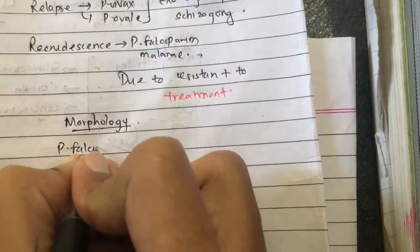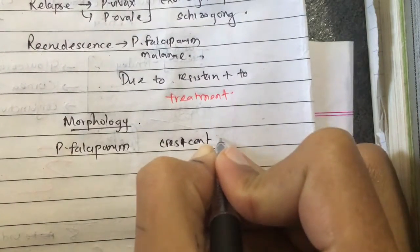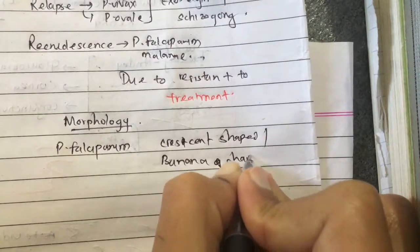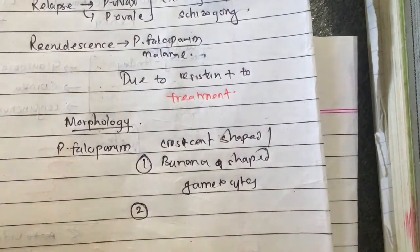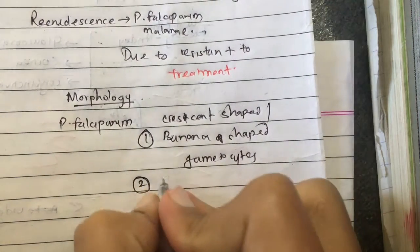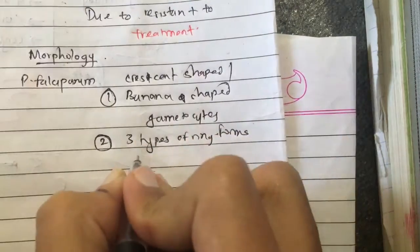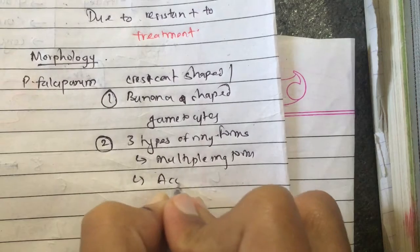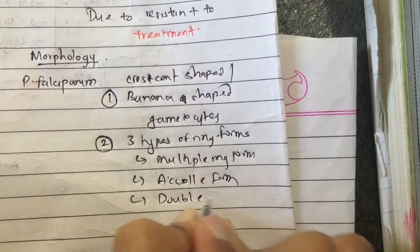The morphology of the various types of plasmodium — the most important is Plasmodium falciparum. It has crescent-shaped or banana-shaped gametocytes. The second important point is that three types of ring forms are present: multiple ring forms, accolé forms, and double-dot ring forms.